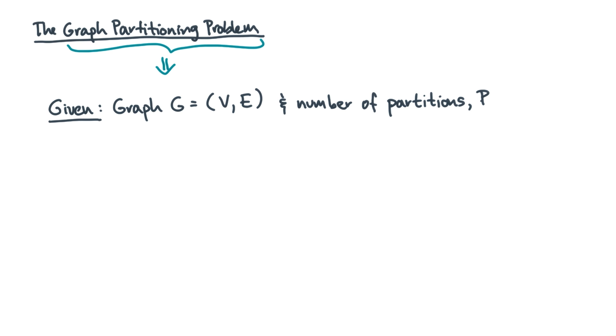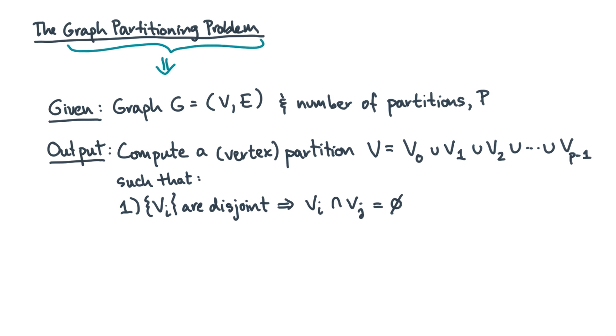This example motivates the classic graph partitioning problem. You're given a graph and a target number of partitions as input. Your goal is to divide the vertices into, say, p partitions. You'd like this partitioning to have the following properties.